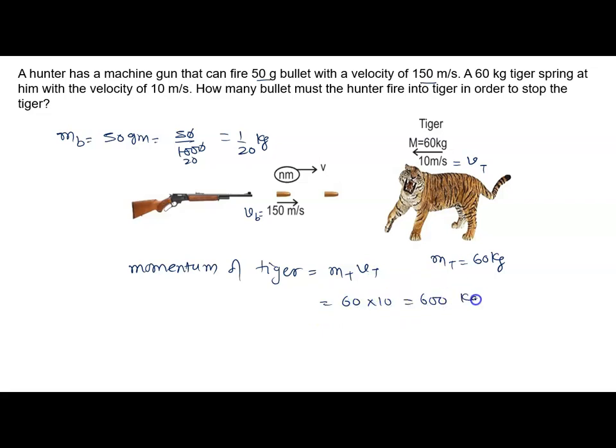Now, the momentum of one bullet is given by the mass of one bullet times its velocity. That's 1/20 times 150, which equals 15/2 kilogram meters per second. But we need to find how many bullets.